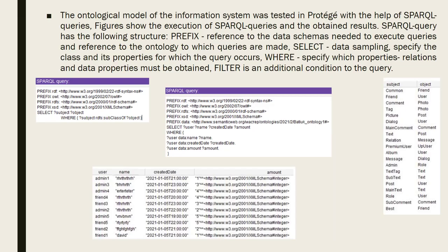Here, we can see the ontological model of the information system was tested in the Protégé application with the help of SPARQL queries. Figures show the execution of SPARQL queries and the obtained results. A SPARQL query has the following structure: a prefix reference to the data schemas, select for data sampling, where to specify which property relations and data properties must be obtained, and filter as an additional condition to the query. On screen, we can see the actual SPARQL queries and the results for them.